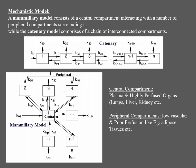The mammillary model consists of a central compartment interacting with a number of peripheral compartments surrounding it. In the diagram, the central compartment is compartment 1 and the three peripheral compartments are 2, 3, and 4. Between the central compartment 1 and peripheral compartment 2, you can see two arrows: one denoted as K12 and the other as K21. K corresponds to rate constant. Drug movement from compartment 1 to 2 is denoted K12; drug movement from 2 to 1 is denoted K21.